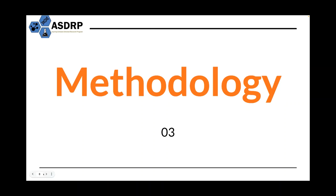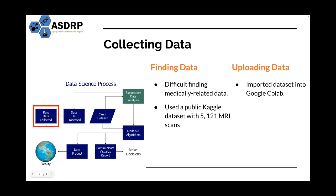Now let's move on to some of the methods discussed in our project. The first step in our data science process is collecting data. Medical-related data is usually pretty confidential, and importing the data into Google Colab was challenging because only one person was able to access the data at a time. To combat this, we imported the dataset directly into Google Colab, which is a shared Jupyter notebook that allows us to create documents containing live code, text, and equations. With this, we were able to use a combination of Bash Script and Python.